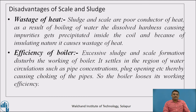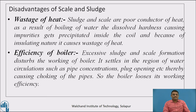Now we will see the disadvantages of scale and sludge. The first is wastage of heat — sludge and scale are poor conductors of heat. As a result of boiling, dissolved hardness-causing impurities precipitate inside the coil and, due to their insulating nature, cause wastage of heat. The second effect is reduced boiler efficiency — excessive sludge and scale disturb the working of the boiler by settling in regions of water circulation such as pipe connections and plug openings, causing choking of the pipes and loss of working efficiency.